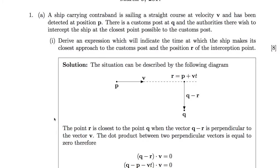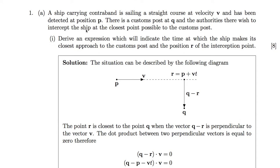Question 1. We have a ship carrying contraband that's sailing in a straight course at velocity V and has been detected at position P. We have another customs post at Q. We need to derive an expression which gives the time of the closest approach of this customs vessel to Q.